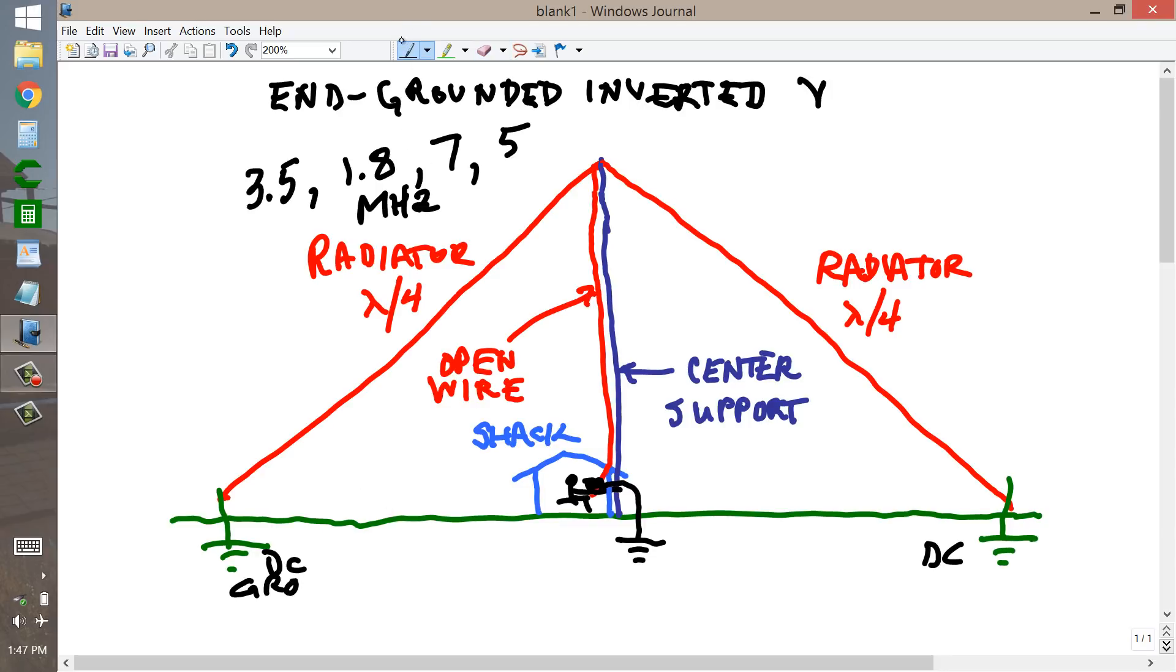DC grounds keeps the antenna from developing electrostatic charges, directs any electrostatic discharge in the vicinity of a thunderstorm, away from your feed line, away from your station, and towards the ends of the antenna.